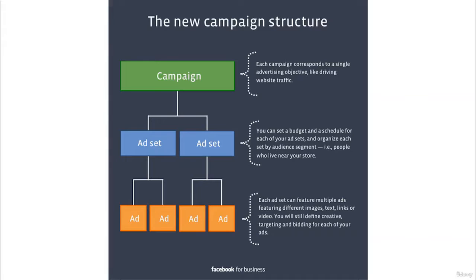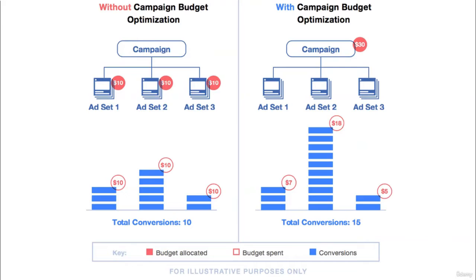There are three layers in the Facebook campaign structure: first is the campaign, second is the ad set, and third is the ad. Each campaign corresponds to a single advertising objective, like driving website traffic. Each campaign can have multiple ad sets with different targeting, and further, each ad set can have multiple ads.